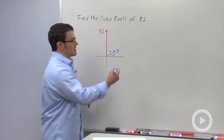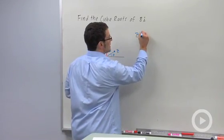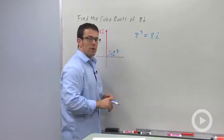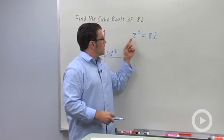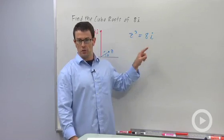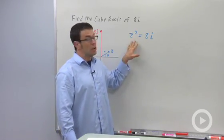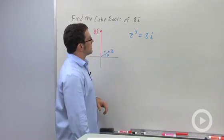I want to begin this by setting up an equation, z cubed equals 8i. Remember, the cube root of 8i would be a number that when cubed gives you 8i. So all the cube roots have to satisfy this equation. So I'm looking for solutions to this equation.